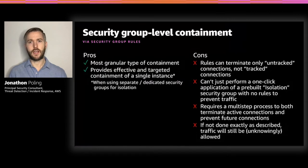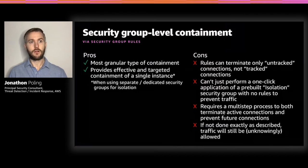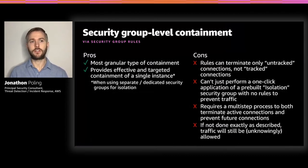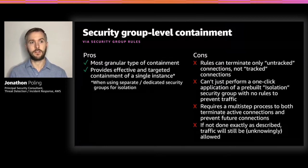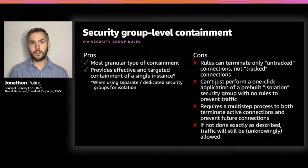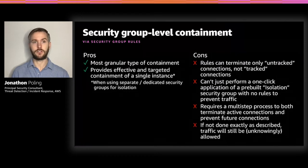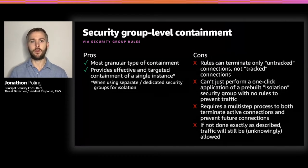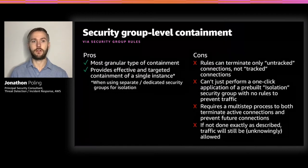Now we better understand how security groups work. What are the pros and cons of leveraging security group rules for instance containment? It's the most granular type of containment, providing extremely effective and targeted containment of a single instance when using separate or dedicated security groups for isolation. On the downside, rules can terminate only untracked connections and not tracked connections, and you can't just perform a one-click application of a pre-built isolation security group with no rules to prevent all traffic. This requires a multi-step process to both terminate active connections and prevent future connections.